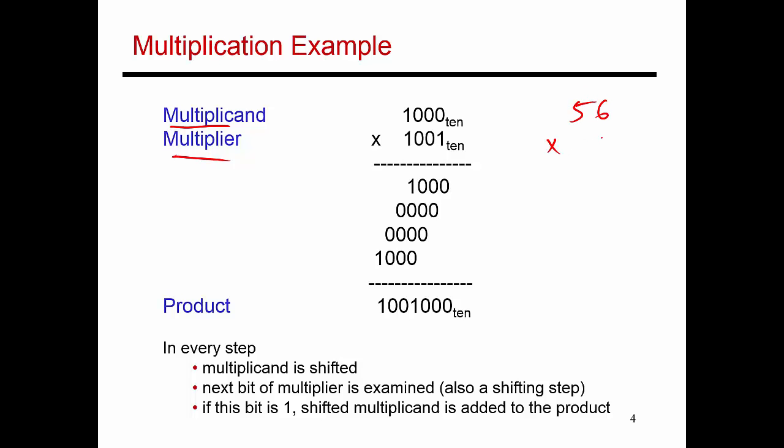56 times 43. The way you do it is you take this first bit down here, and that digit is a 3. So I do 3 times 56, which is 168.